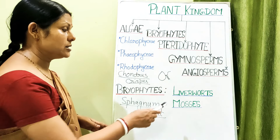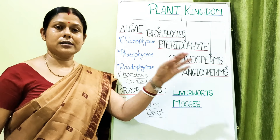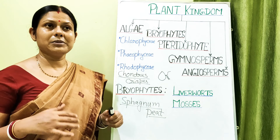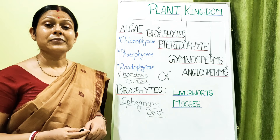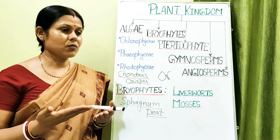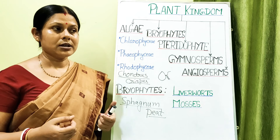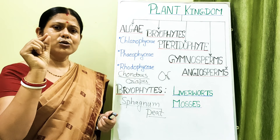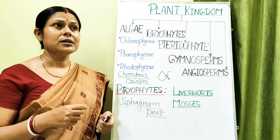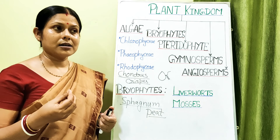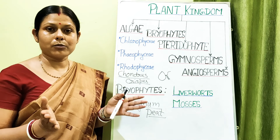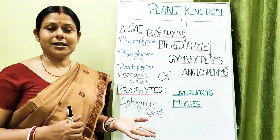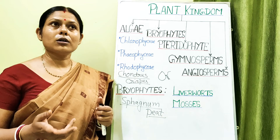Bryophytes are further classified into liverworts and mosses. The name liverworts comes from the fact that when early taxonomists found this plant, the thallus appeared somewhat ribbon-like, and the overall shape resembled the liver organ of human beings. From there they gave it the name liverworts, thinking it might have therapeutic properties related to liver ailments.